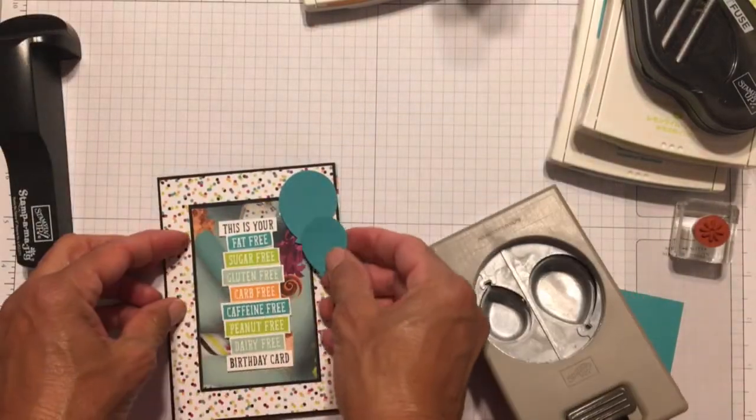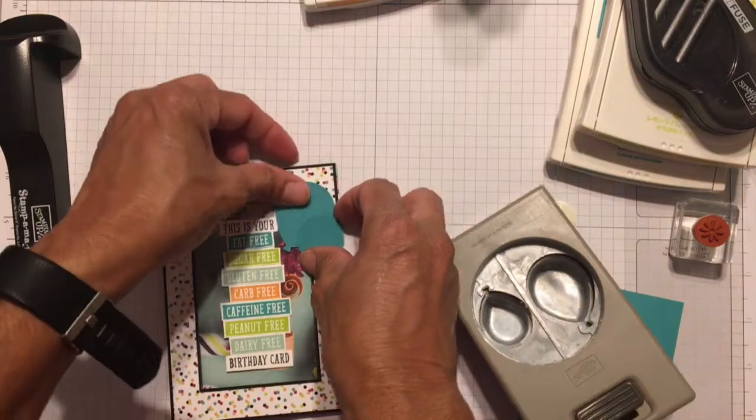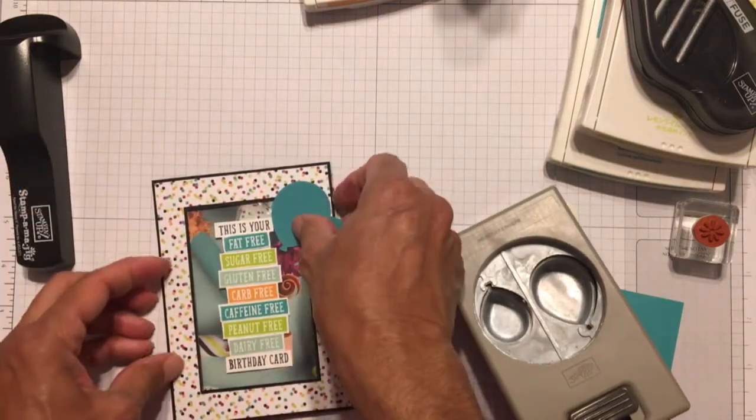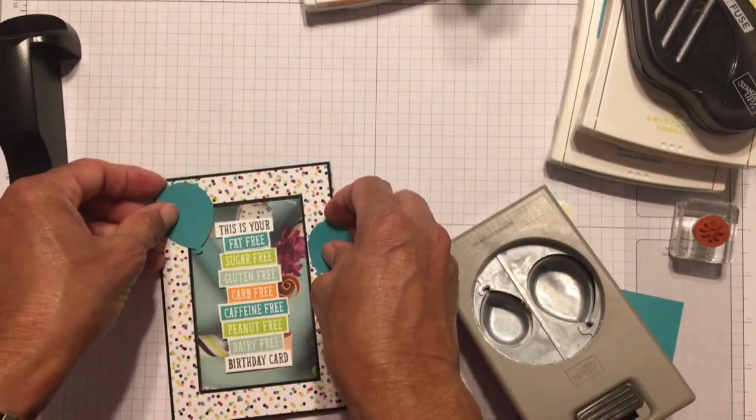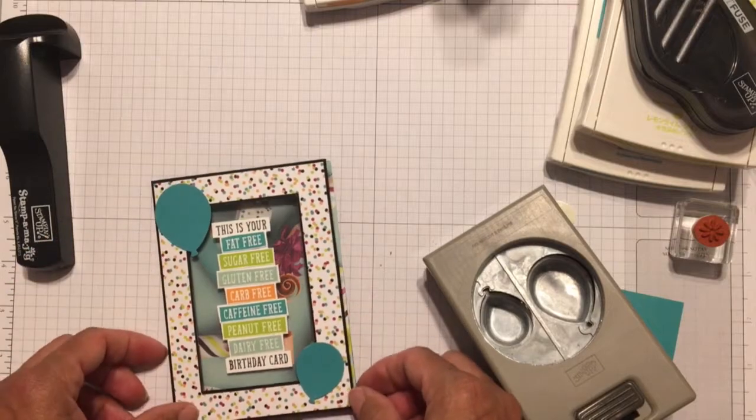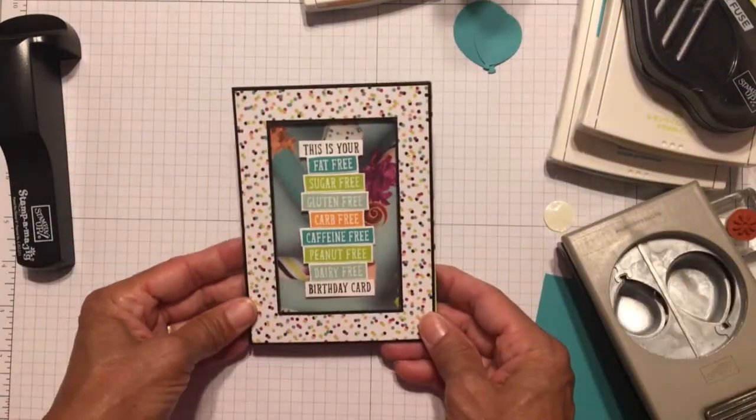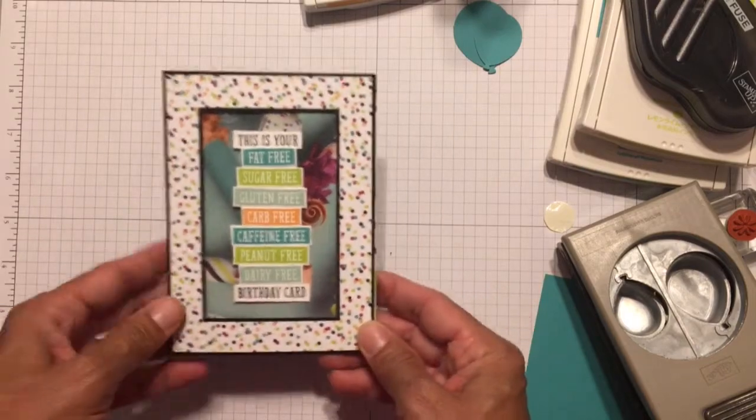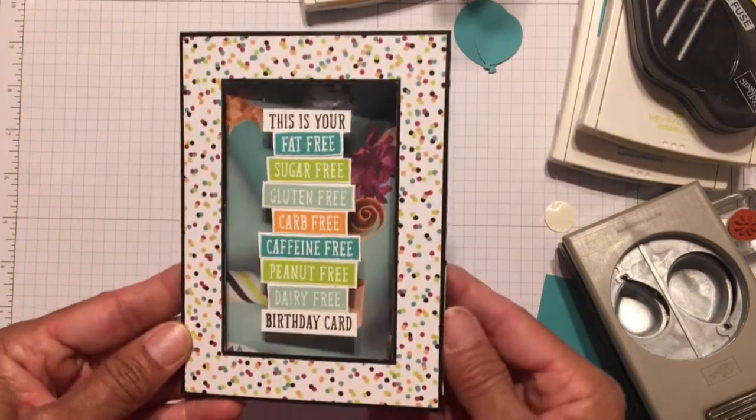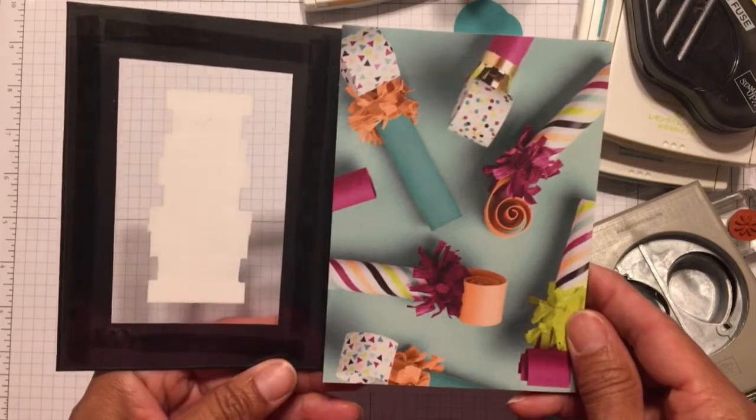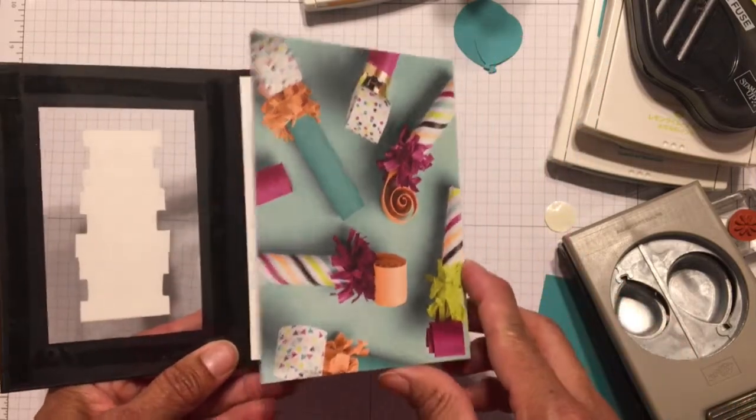I did toy with the idea of adding a couple of balloons to the front of the card, and I got some Bermuda Bay cardstock and the Balloon Punch, and punched out some balloons and kind of lined them up. And in the end, I just didn't like it. I liked the card just the way it was. What do you think? Should I have added the balloons? Let me know in the comments if you have an opinion one way or another.